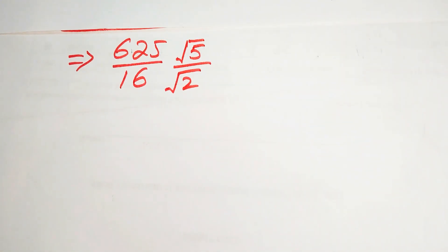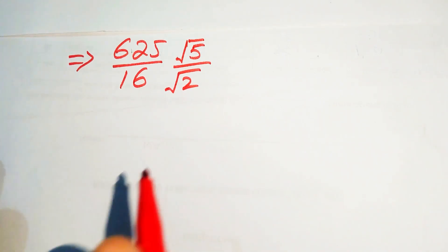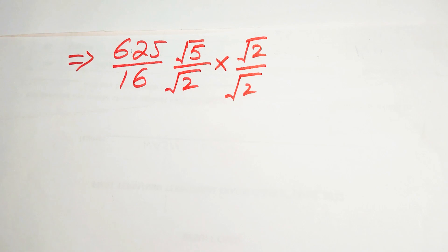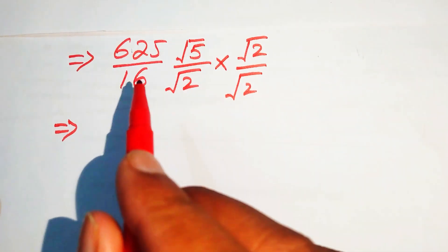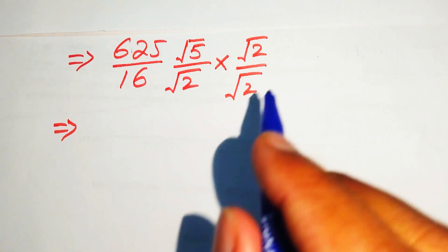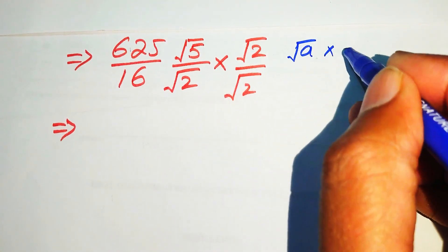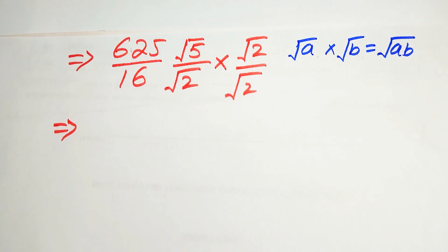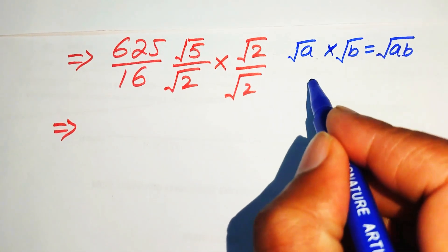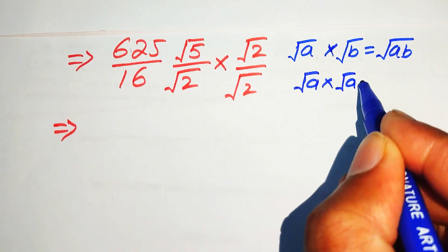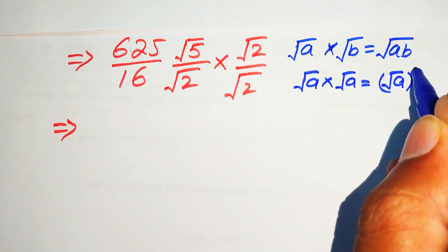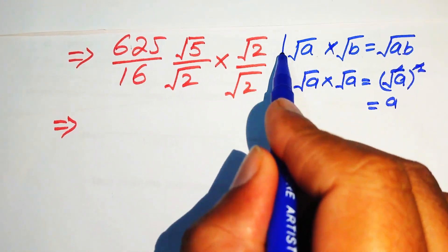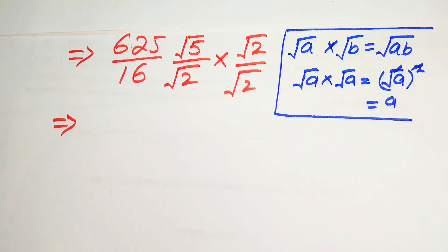To simplify further, we multiply and divide by the square root of 2. We use the radical law that the square root of a multiplied by the square root of b equals the square root of ab, and that the square root of a multiplied by the square root of a equals a. We apply these two laws, focusing on the numerators and combining the radicals.